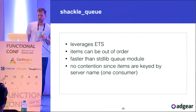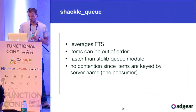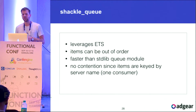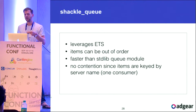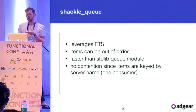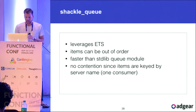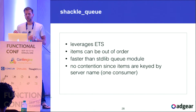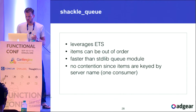Shackle queue once again leverages ETS. If you're doing anything performance-related in Erlang, ETS is kind of your go-to trick. One nice benefit over the standard library queue is you can have out-of-order items — for example, Cassandra's new protocol doesn't guarantee response order, so with a simple FIFO queue you'd be in trouble. With ETS you can look up items by key. There's no contention since queues are keyed by server name and only one server reads each queue — one consumer means no locking.